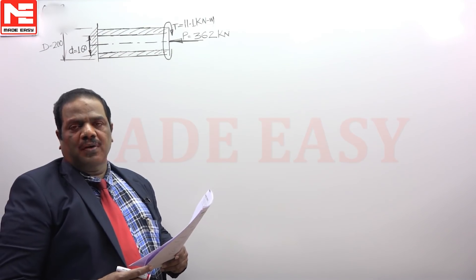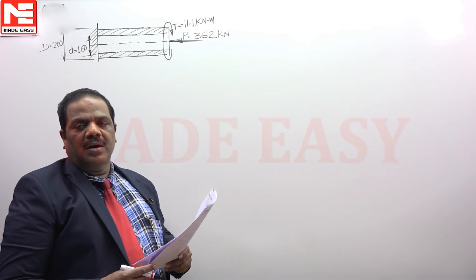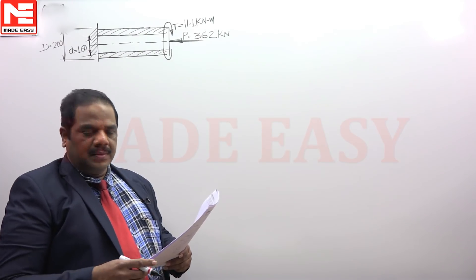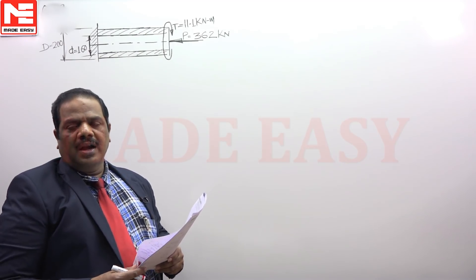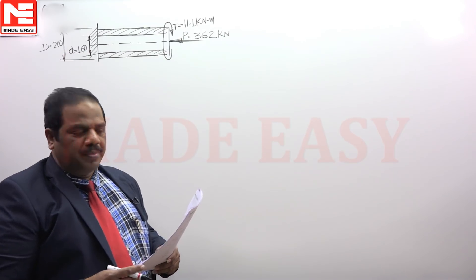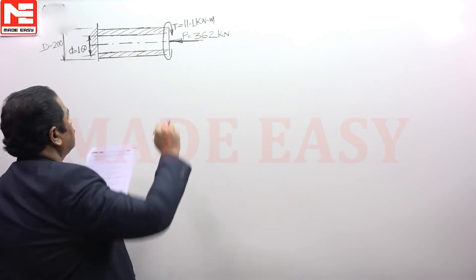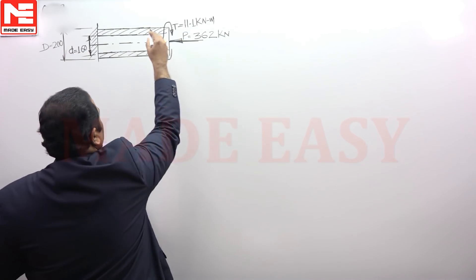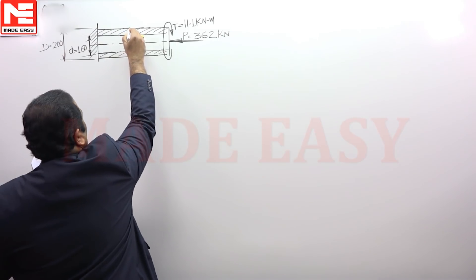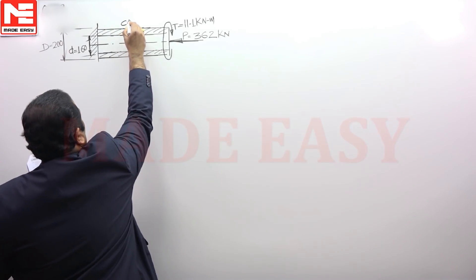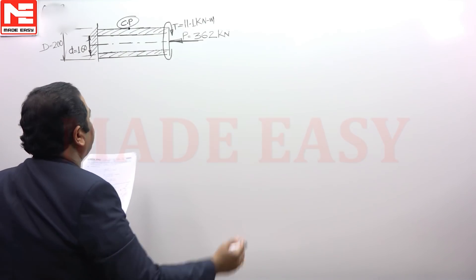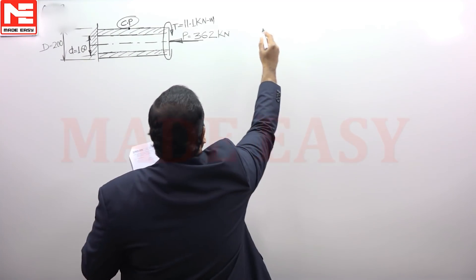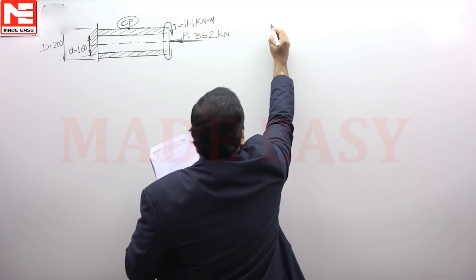So, any point on the outer surface is a critical point. For a cross-section, any point on the periphery is going to be a critical point. We can consider this critical point on the periphery, and I can draw the state of stress.